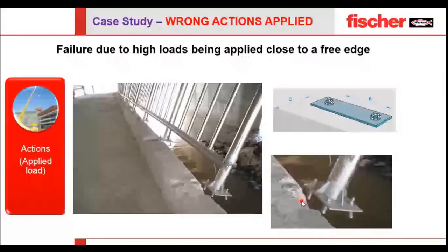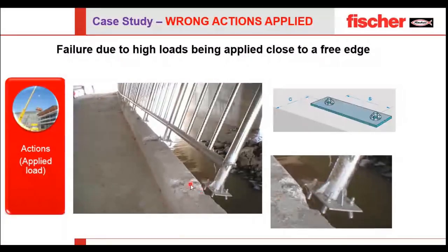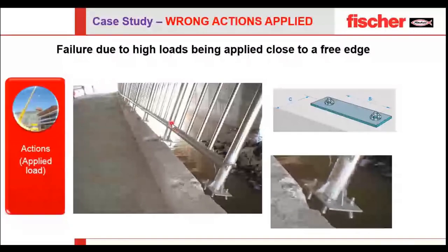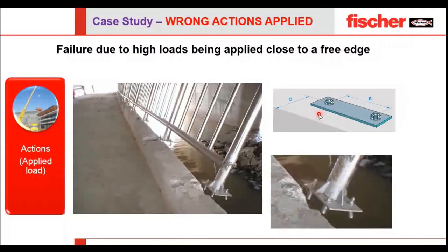The second case study is wrong actions applied. You can see a beautiful handrail here — unfortunately a failure occurred. The load or action applied was not recommended or designed according to the handrail's specifications. You can see how all the handrail collapsed due to minimum edge distance or minimum spacing. There could be a couple of reasons, but the loads were not properly considered.